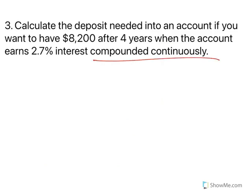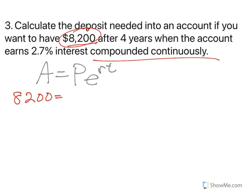Let's do one more example. And here we're going to do compounding continuously. So remember here we have A equals PE to the RT. We want to have $8,200 after four years when the account earns 2.7% interest compounded continuously. So let's plug in what we know. We want to have 8,200. Because we're calculating the deposit needed, the P stays as is. As I mentioned earlier, E is a mathematical constant. And then your exponent is going to be your interest rate, 0.027 times the number of years, which is 4.